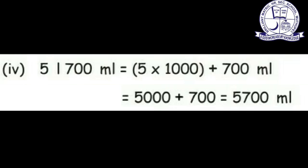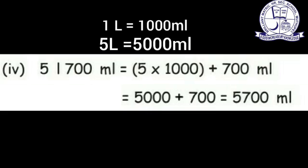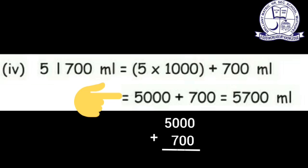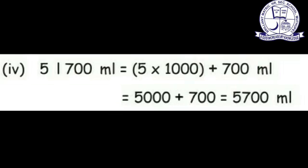Next, convert 5 liter 700 milliliter to milliliter. First convert 5 liters: 5 into 1000 equals 5000 milliliter. Then add the remaining 700 milliliter: 5000 plus 700 equals 5700 milliliter. So 5 liter 700 ml equals 5700 milliliter.